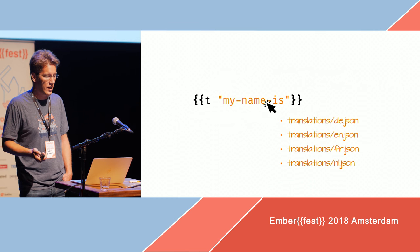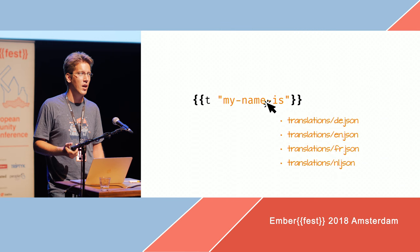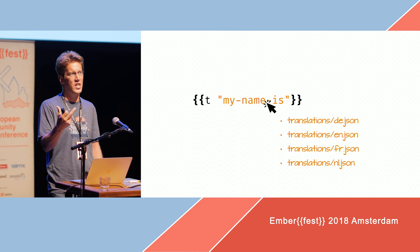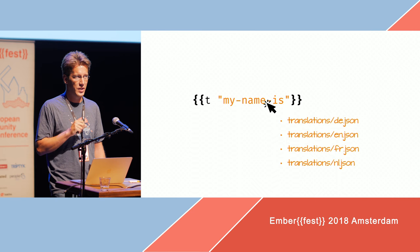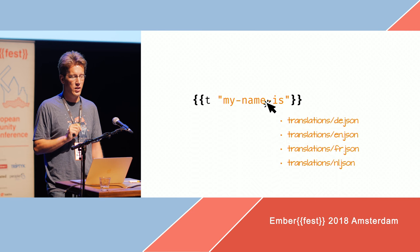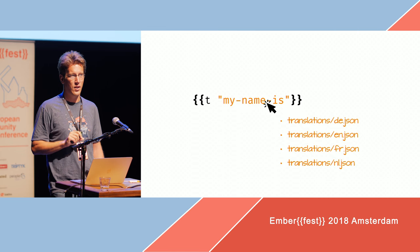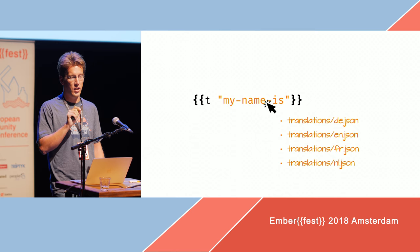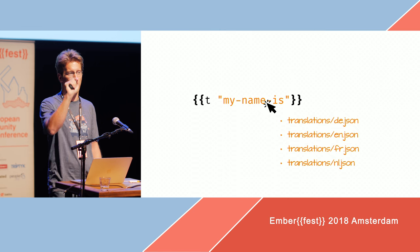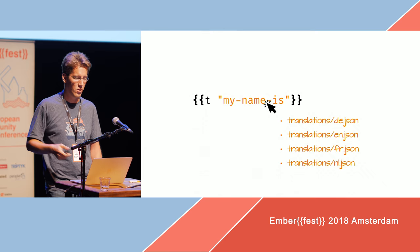One more advanced thing is the T helper from ember-intl and ember-i18n. You pass it the key to a translation. What you could do is, if you click that key, it could offer you all the translations in all the languages you have — so you can immediately, from your template, navigate to the right translation in Russian or French or whatever.